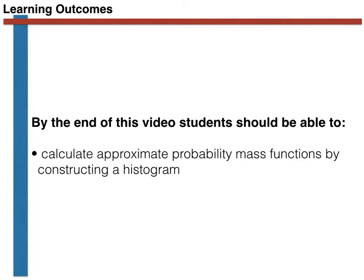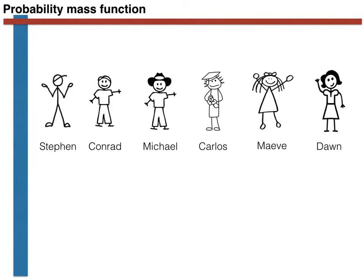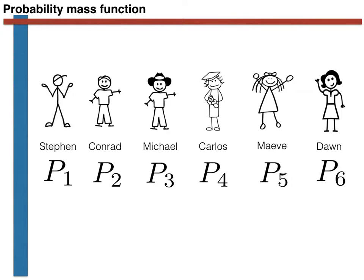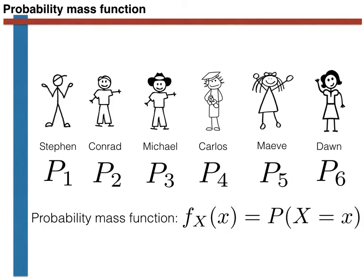Without further ado, let's begin with a bit of revision. Remember that in previous videos I have introduced the notion of a discrete random variable by considering games involving six individuals. I have explained that the person chosen in the game is random, but that I can assign a probability to picking each of the players. Furthermore, I have called these probabilities P1, P2, P3, P4, P5 and P6, and I have explained that each of these probabilities is a real number between 0 and 1.